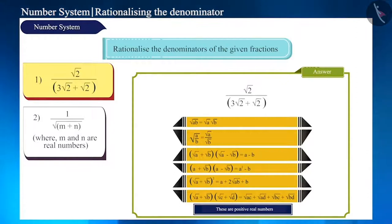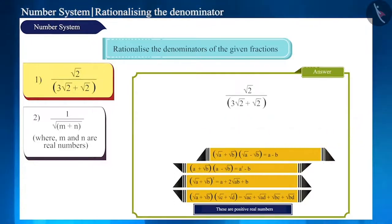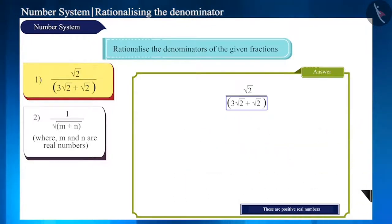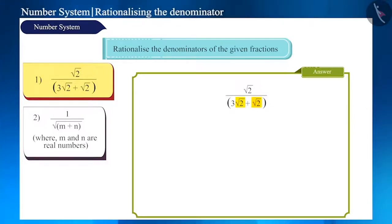Friends, we can rationalize the numbers in this question without using any identity. Let us see how. Here, the denominator has root 2 in both the numbers, so we can combine them as 4 root 2. And since the numerator also has root 2, we can cancel it from the numerator and the denominator and get the result as 1 upon 4.